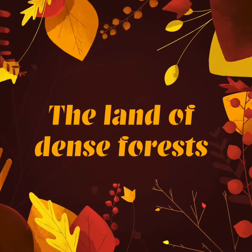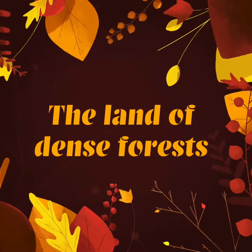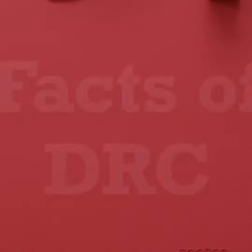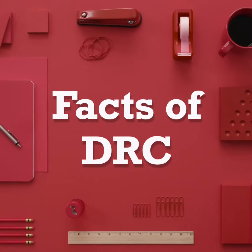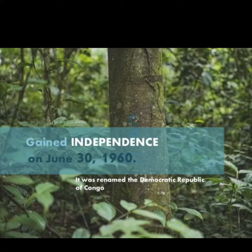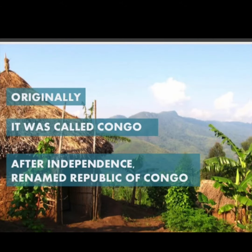In this video, we are going to learn about some facts about the DRC — the land of dense forest. The country gained independence on June 30th, 1960. Originally it was called Congo, but after independence it was renamed as Republic of Congo.